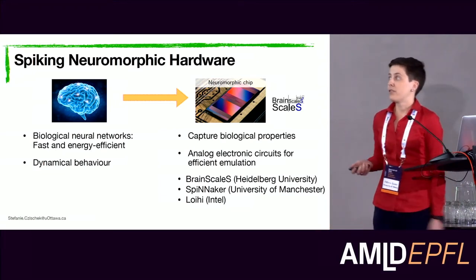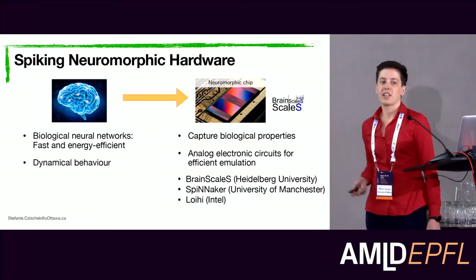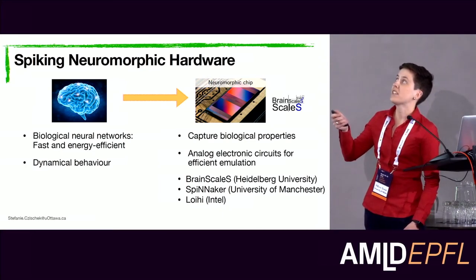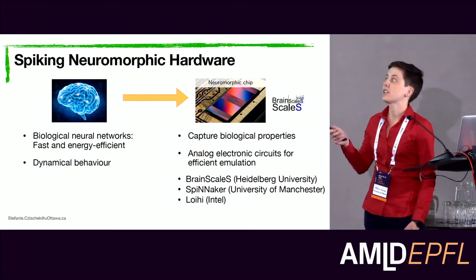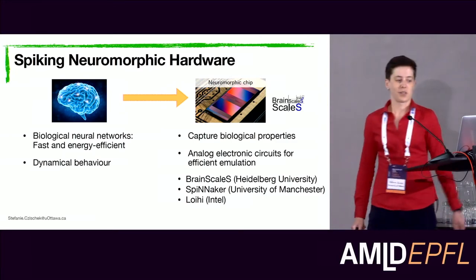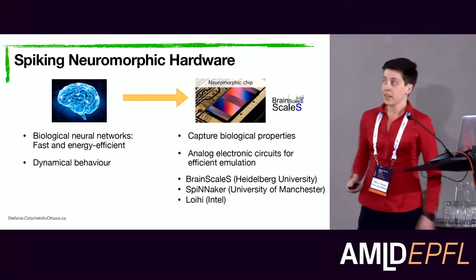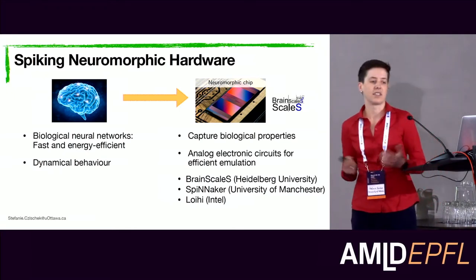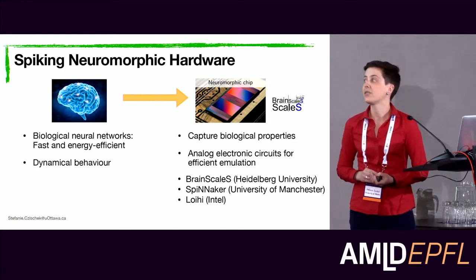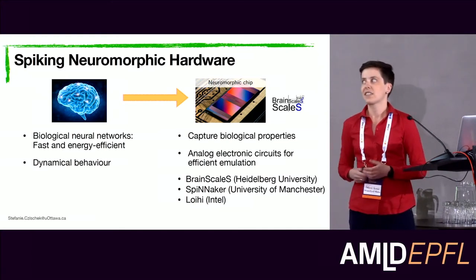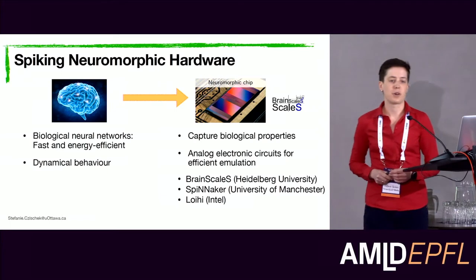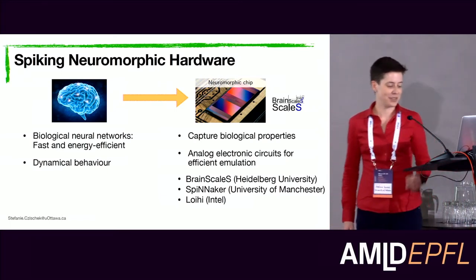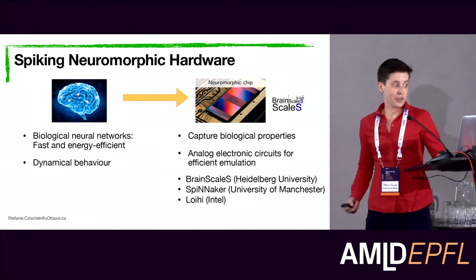This is why people started developing analog spiking neurons based on electronic circuits. These analog circuits directly emulate the dynamical behavior of biological neurons without having to solve differential equations. Many groups are developing such neuromorphic chips. One example is the BrainScaleS chip developed at Heidelberg University. Other examples include SpiNNaker and Intel's Loihi — all very powerful and effective. There are many more groups working on spiking neuromorphic hardware.